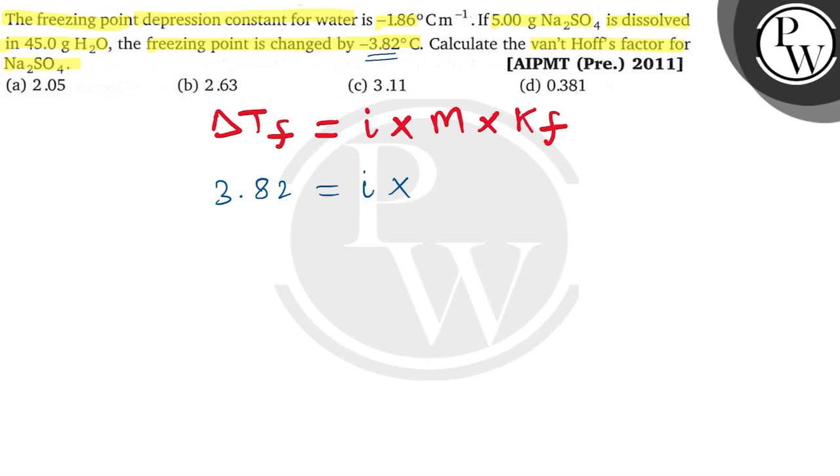Molality is number of moles of solute upon mass of solvent in kilograms. Number of moles of solute: given mass is 5, that is 5 grams of Na2SO4 upon molar mass of Na2SO4 is 142, into mass of solvent that is 45 grams of H2O. Since we're writing 45 in grams here, we need to multiply the numerator by 1000, into Kf. Kf value is 1.86.